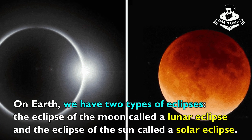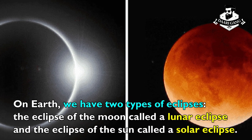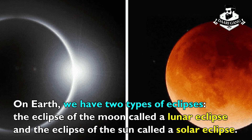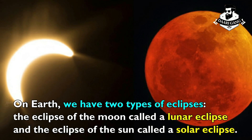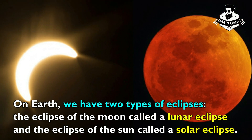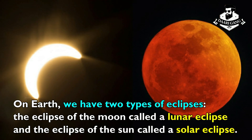On Earth, we have two types of eclipses: the eclipse of the moon, called the lunar eclipse, and the eclipse of the sun, called the solar eclipse.